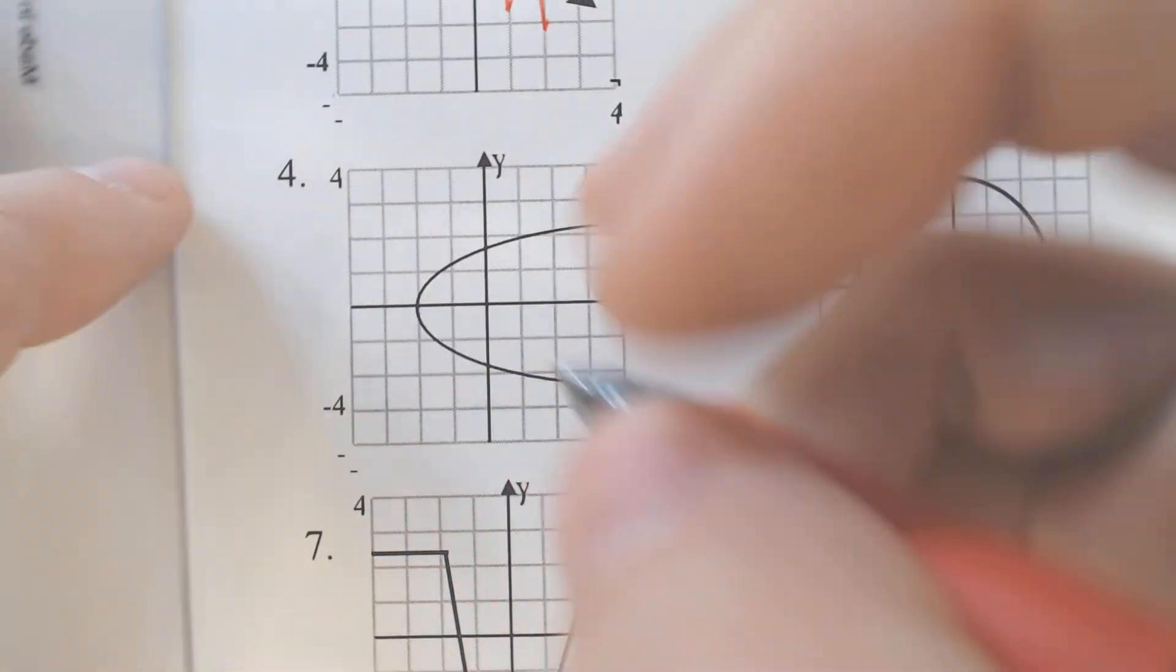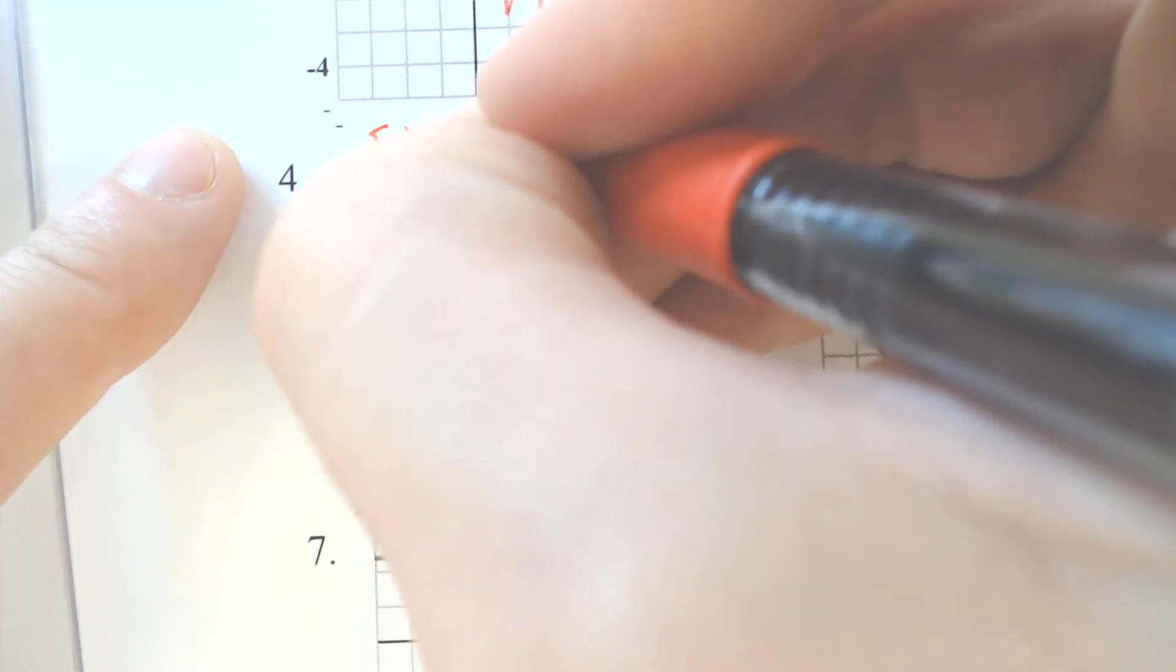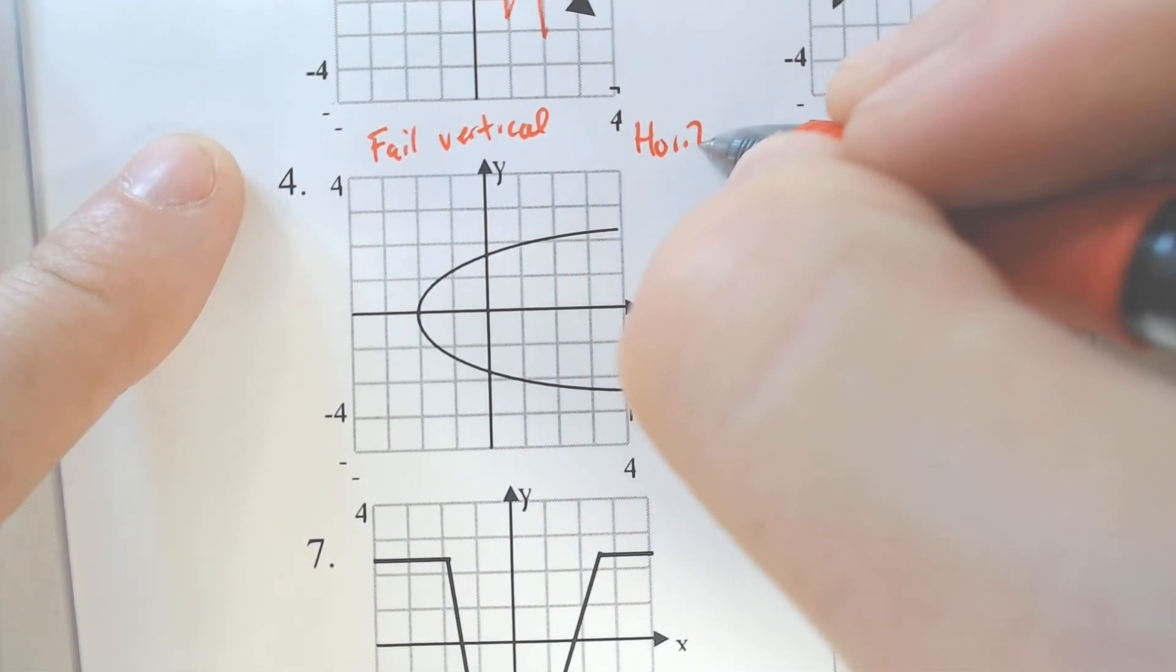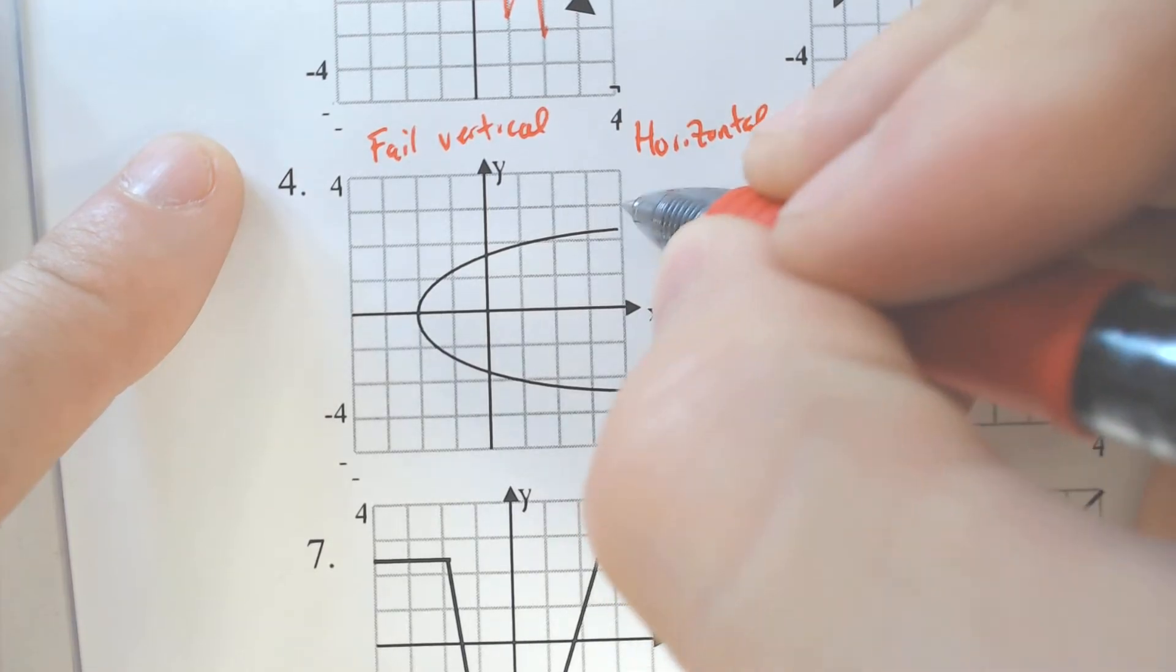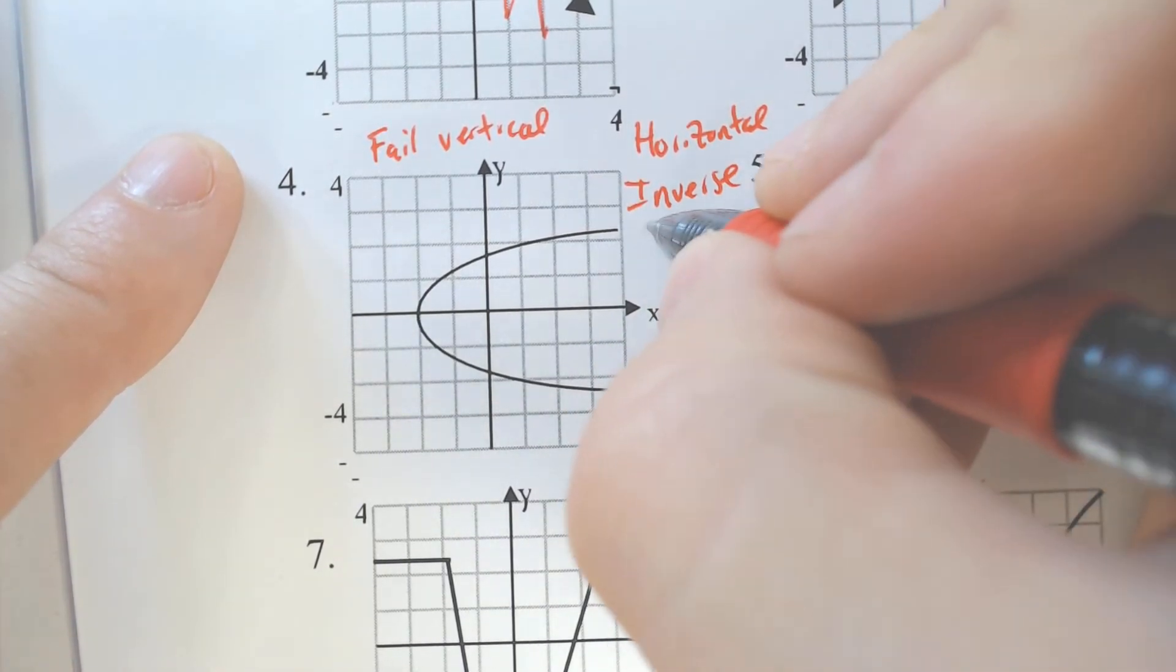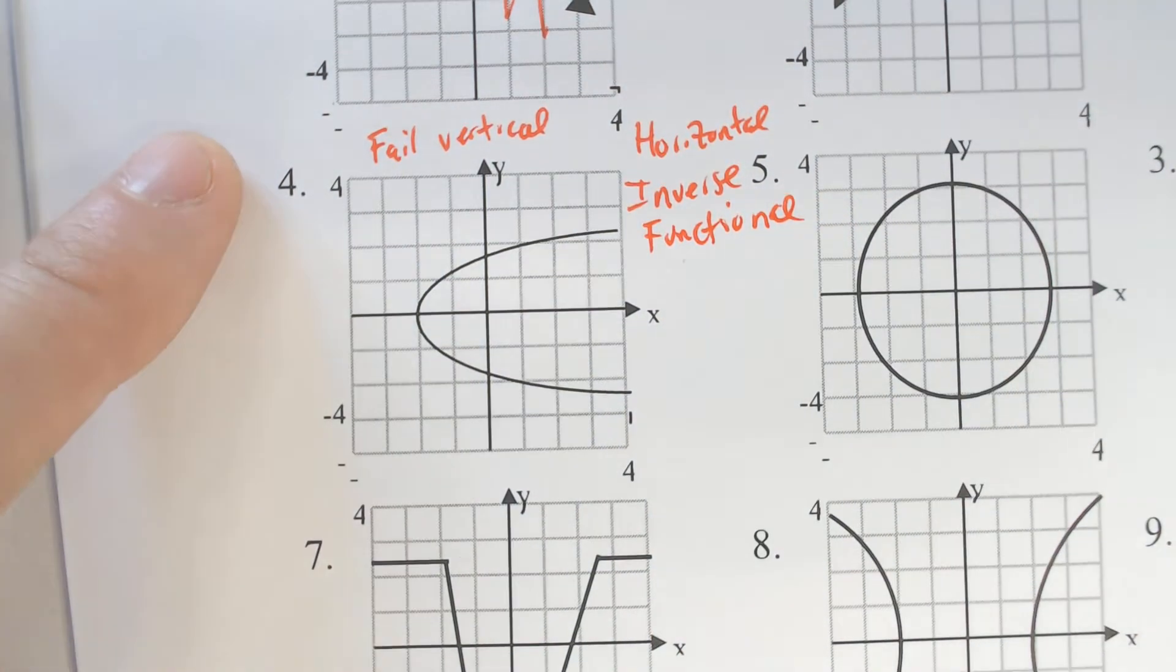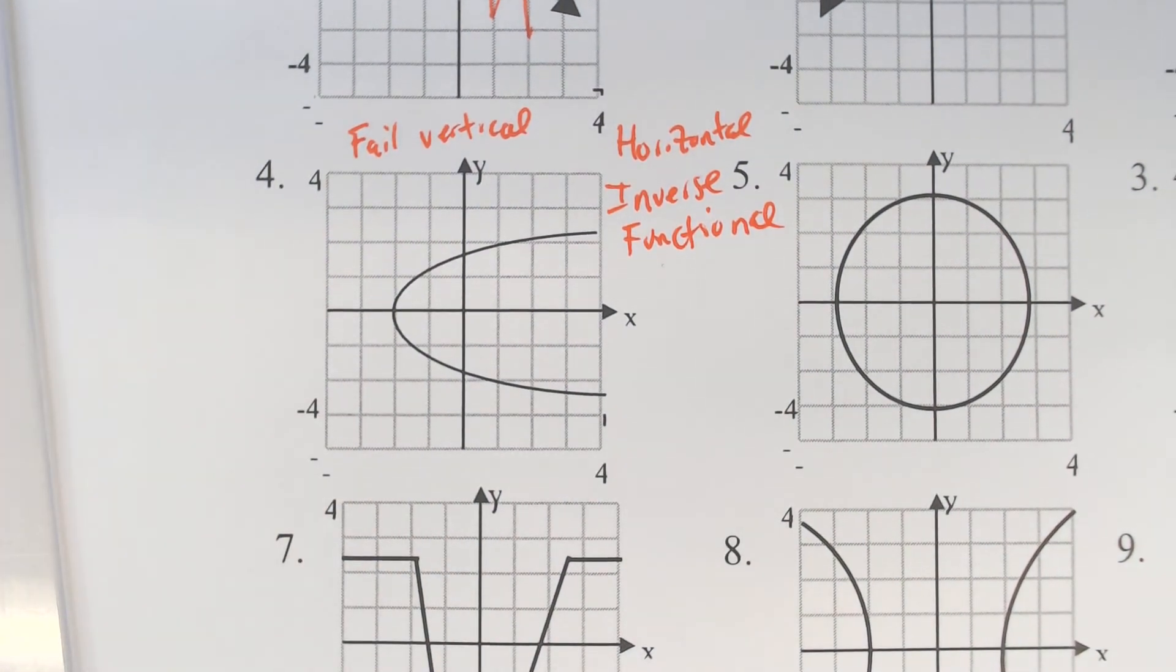So it failed the vertical, but it passes the horizontal. And if it passes the horizontal, the inverse would be considered a function, but that means the original would have not actually been a function. It would have been like two separate entities.